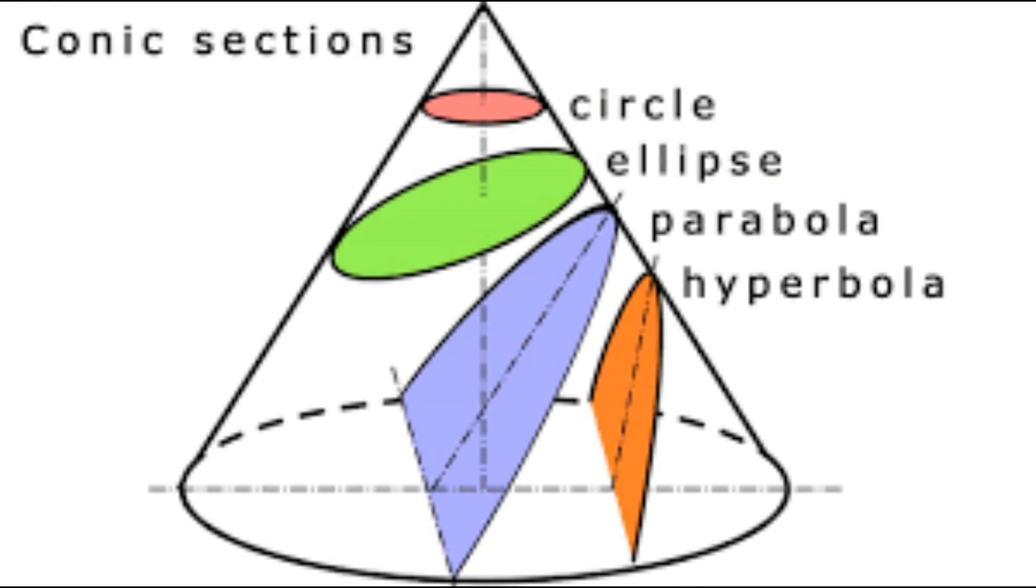Hyperbolas, parabolas, ellipses and circles are all sections of cones and the thing about this is it creates a cone of light.